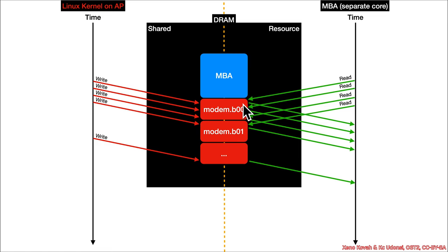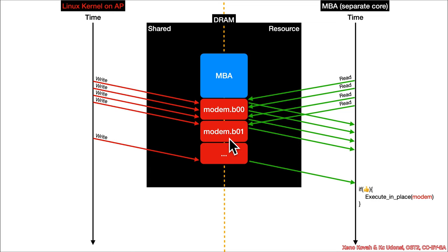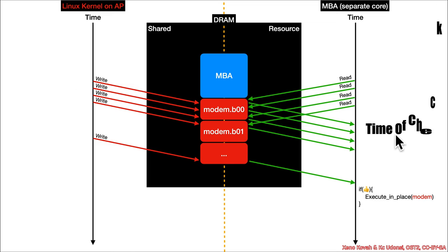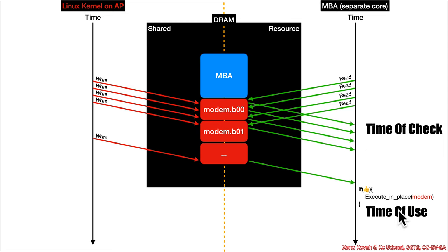The first read fetches clean data, which passes authentication — so the check says it's clean. But then when it goes to execute in place and jumps into that code, that's the second fetch — and it occurs after the attacker has overwritten the region with malicious values. This is a time-of-check, time-of-use vulnerability, specifically caused by a double fetch: the first fetch is a literal read for digital signature verification, and all subsequent fetches are CPU reads to execute the code.